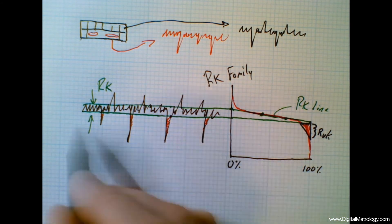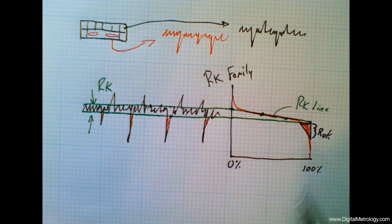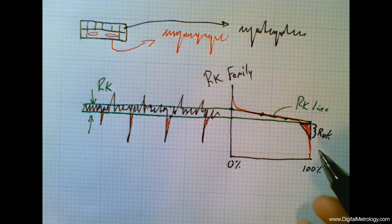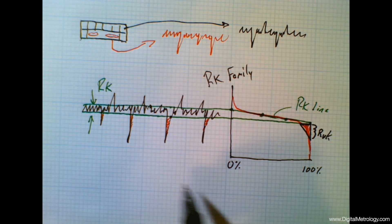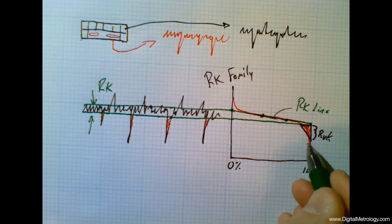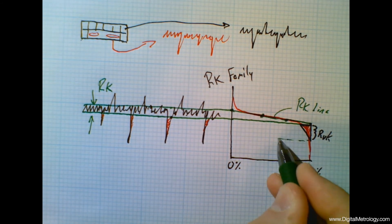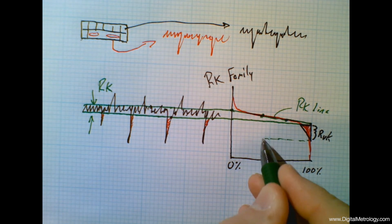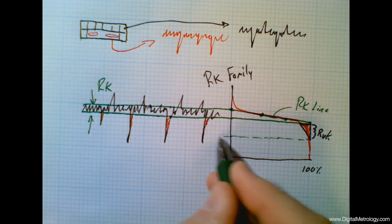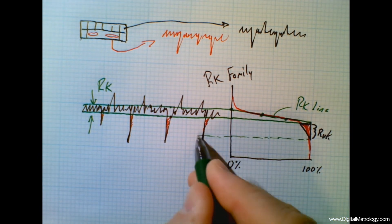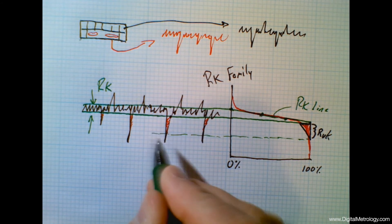It's not an actual depth of any one of these valleys, but it's the effective valley depth of all these valleys combined. It gives us a valley of somewhere around here being our typical or effective oil-holding depth.